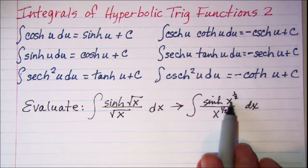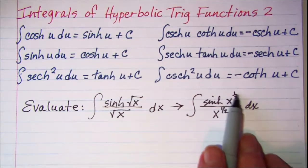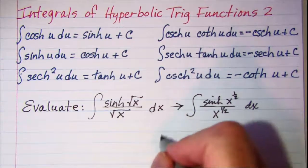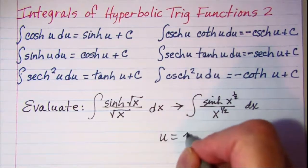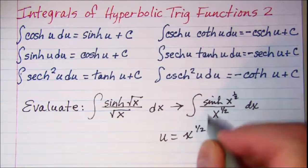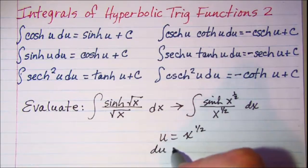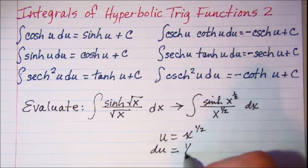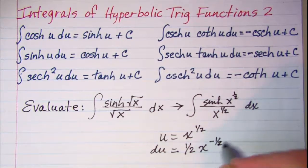Now I'm going to let u be this argument right here. So u equals x to the one-half, then du is equal to one-half x to the negative one-half dx.